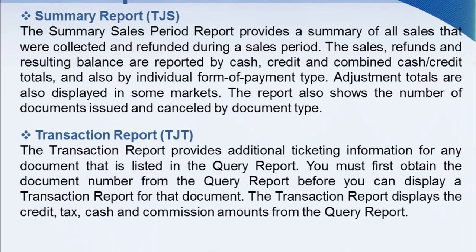Transaction Report: The transaction report provides additional ticketing information for any document that is listed in the query report. You must first obtain the document number from the query report before you can display a transaction report for that document. The transaction report displays the credit, tax, cash, and commission amounts from the query report.